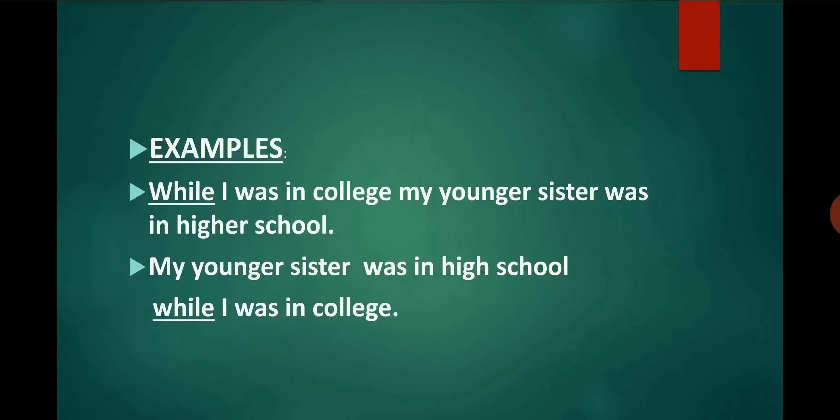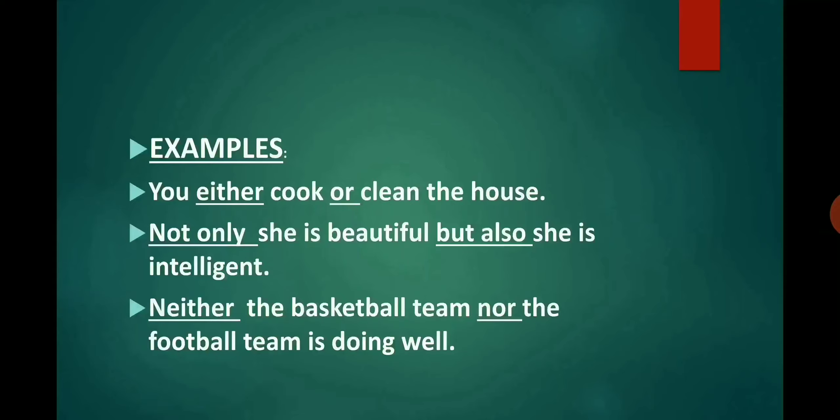Let's look at some examples. First: You either cook or clean the house — here 'either' is used with 'or', forming a co-relative conjunction. Second: Not only is she beautiful, but she is intelligent also — here 'not only' and 'but also' work together as a co-relative conjunction. Third: Neither the basketball team nor the football team is doing well — here 'neither' and 'nor' work together to form a co-relative conjunction.